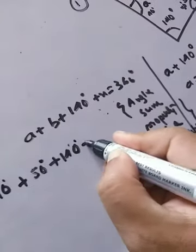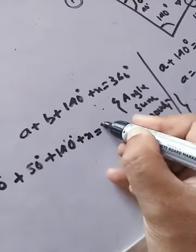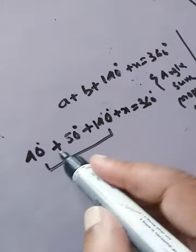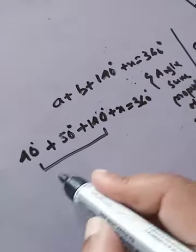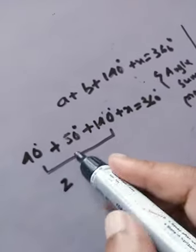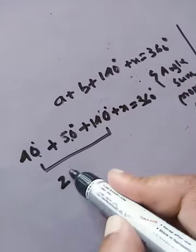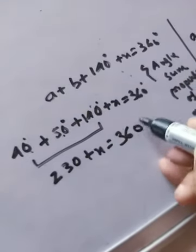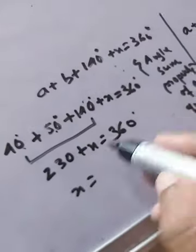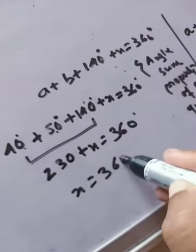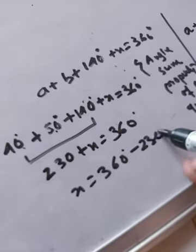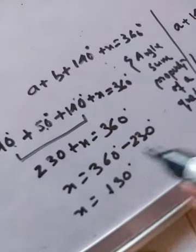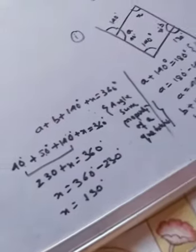Adding up: 40° + 50° + 140° + x = 360°, which gives 230° + x = 360°. Transposing 230°, x = 130°. So this is the solution of question number one.